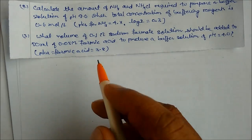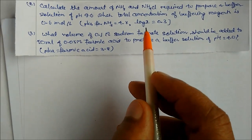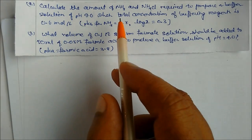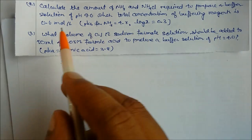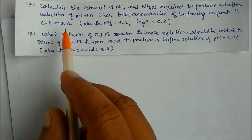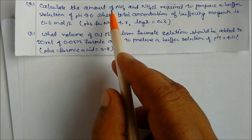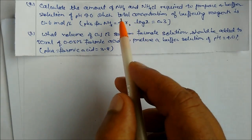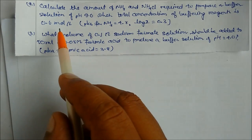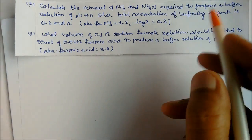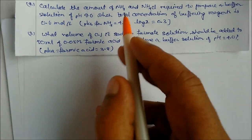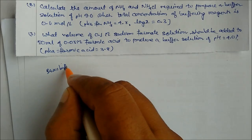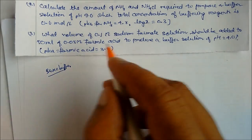Next problem: calculate the ammonia and ammonium chloride required to prepare a buffer solution of pH = 9, when the total concentration of buffering agent is 0.6 mol/L. We need to find both the amount of ammonia and ammonium chloride. Since ammonia is given, this is a basic buffer.